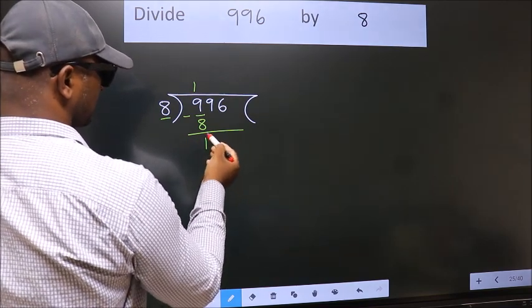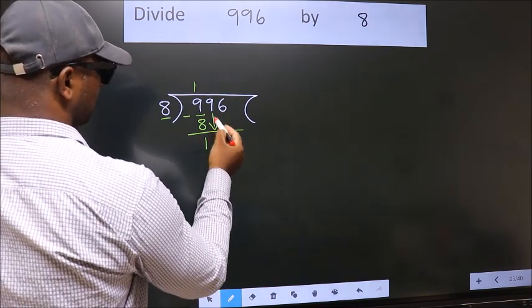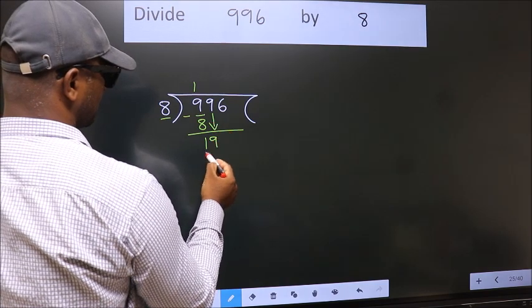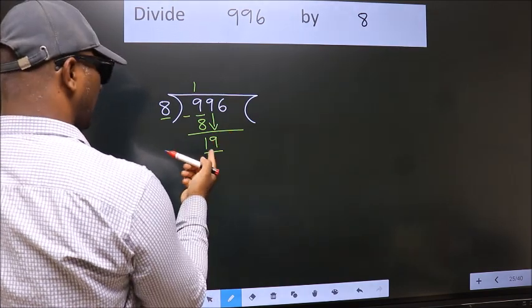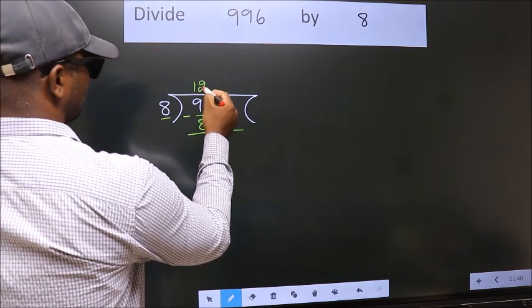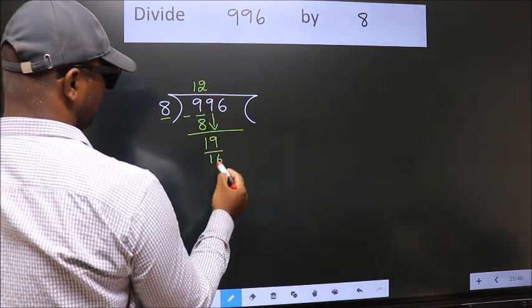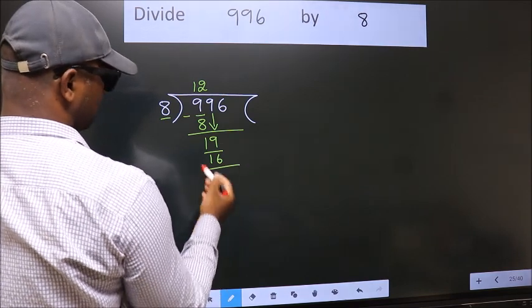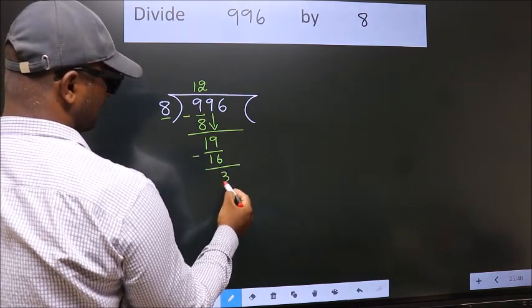After this, bring down the beside number. So, 9 down. So, 19. A number close to 19 in 8 table is 8 twos, 16. Now, we subtract. We get 3.